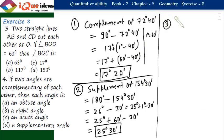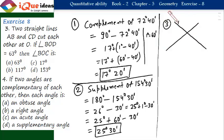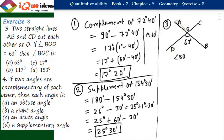Question number 3: two straight lines AB and CD cut each other at O and angle BOD is 63 degrees. Let us place them as A, B and C, D crossing at point O. Angle BOD is given as 63 degrees.